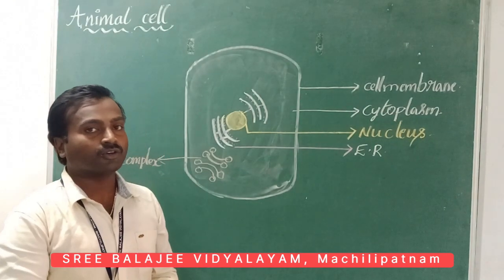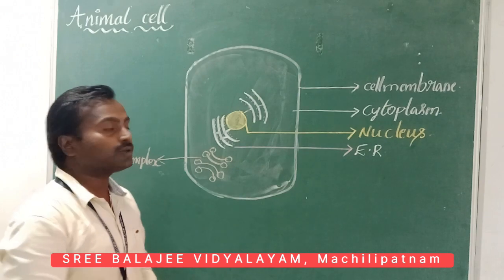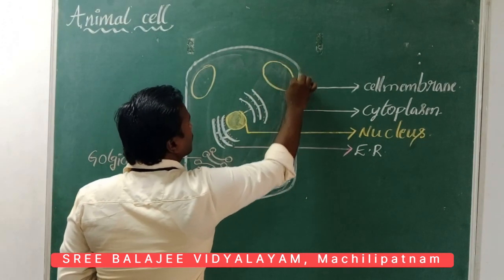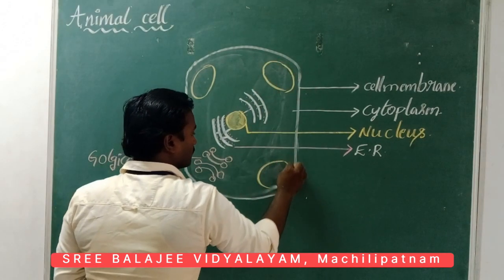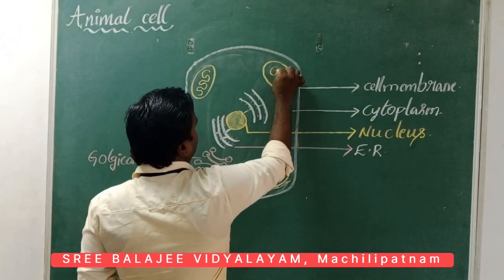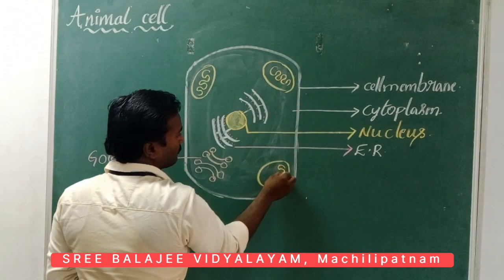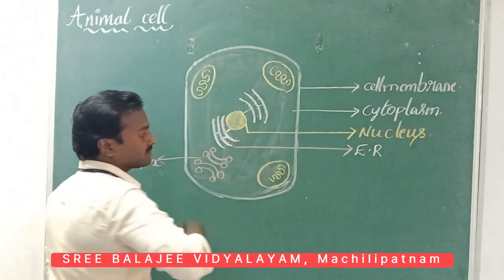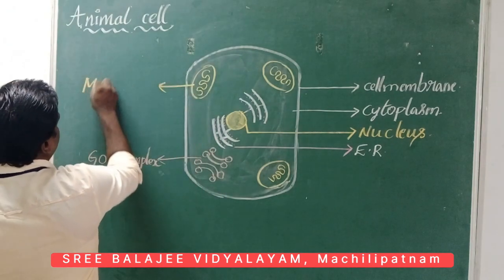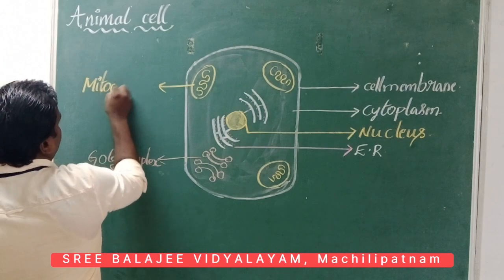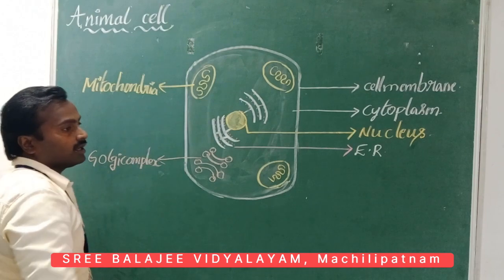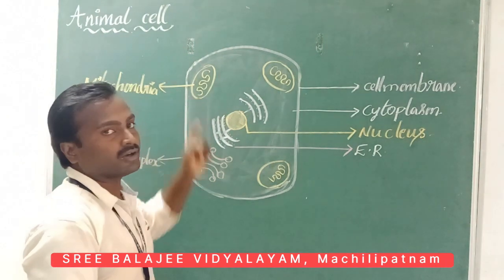Another organelle I am going to draw is the mitochondria. If you observe both the plant cell and the animal cell, they each contain 100 to 150 mitochondria. These mitochondria are useful for the preparation of energy within the cell.